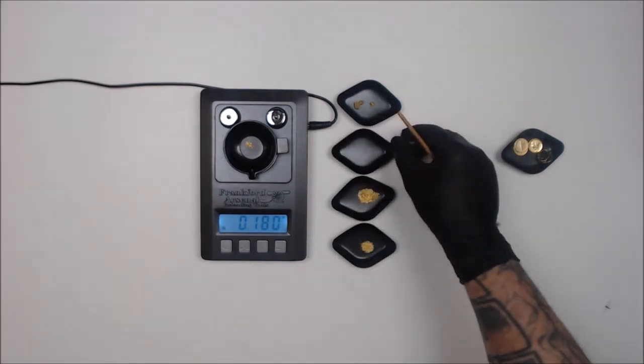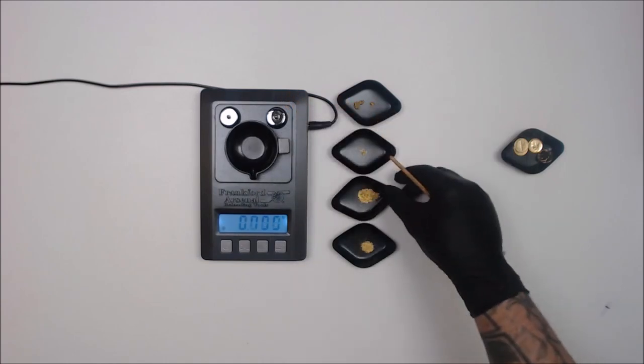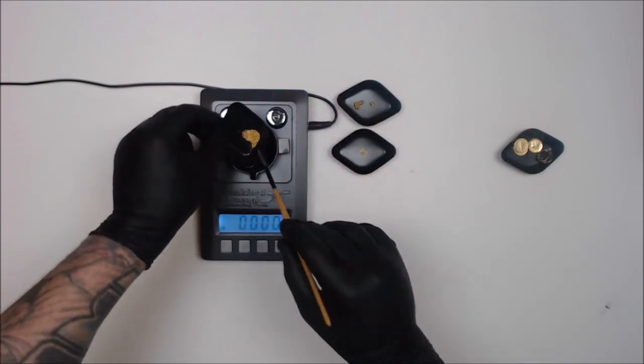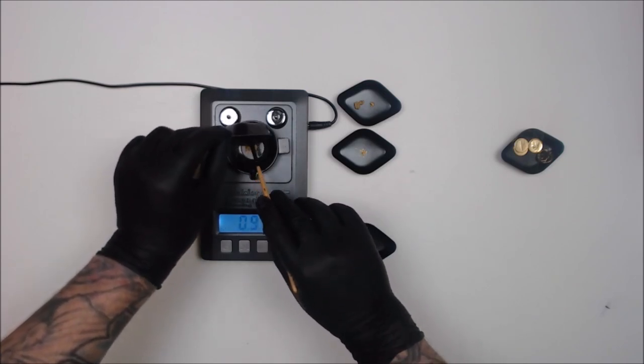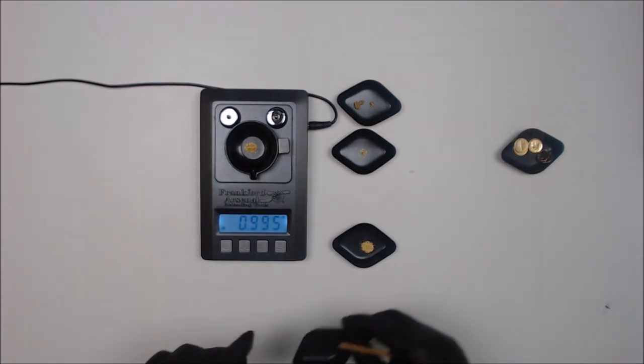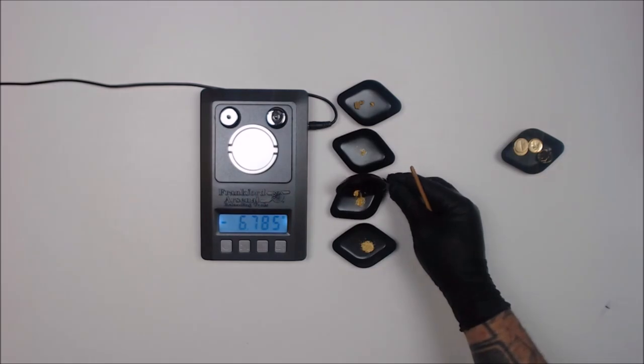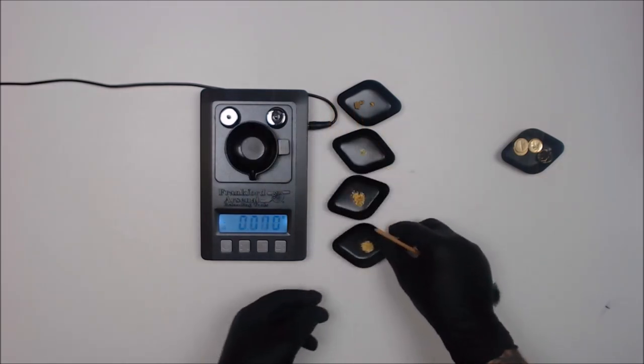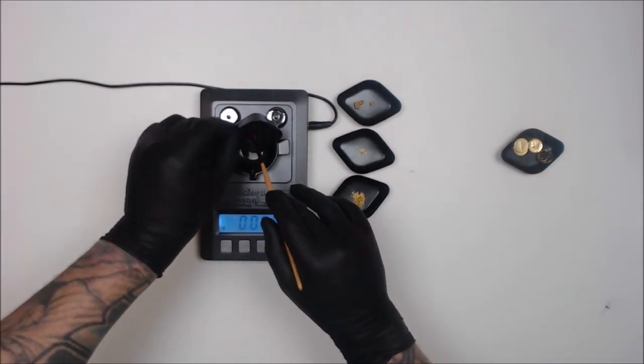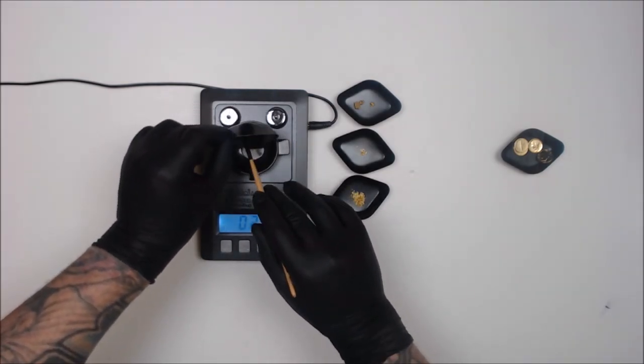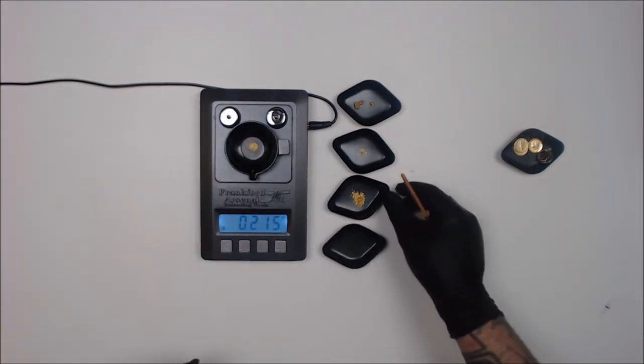And then in the minus 10 plus 20, 0.180. And for the monster pile, the minus 20 plus 40, 0.995, so just short of a gram. And then lastly the minus 40, and this definitely will budge the scale some, bit the gram maybe, yeah. 0.215. So let's just add it all up.